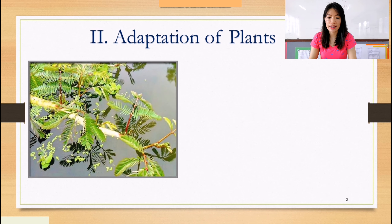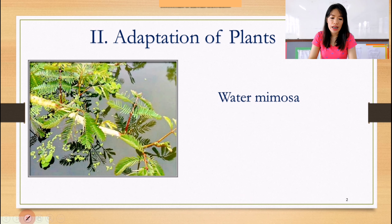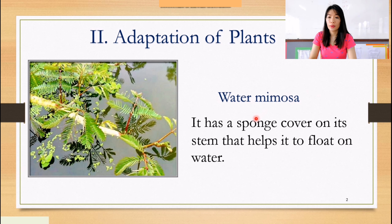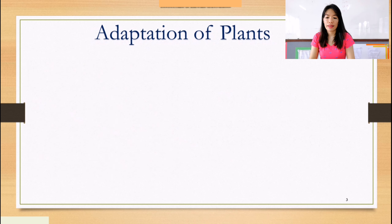The first plant is water mimosa. How does the water mimosa adapt to its environment? Water mimosa has a sponge covering on its stem that helps it to float on water. That is the stem of the water mimosa.